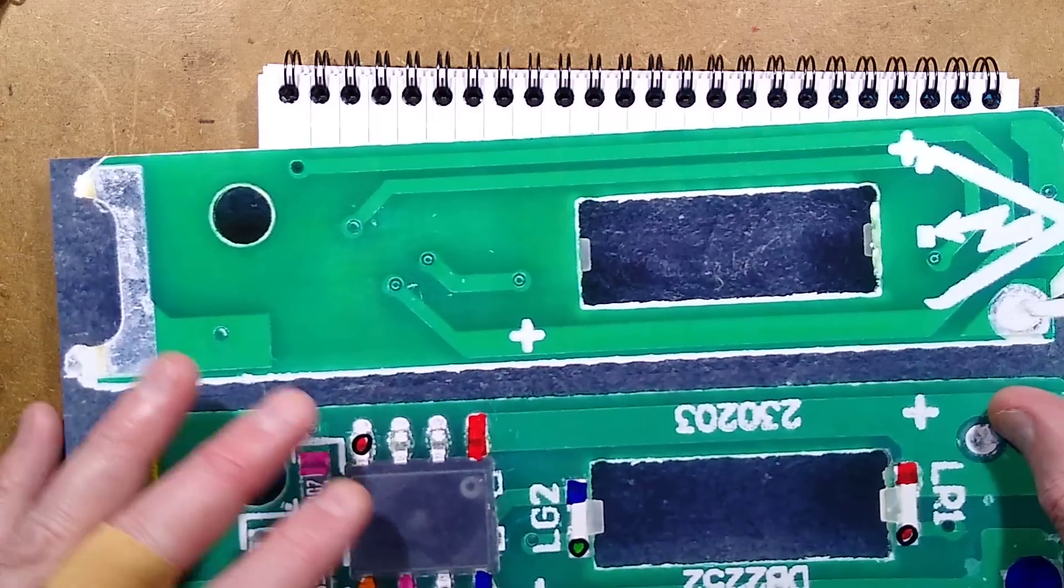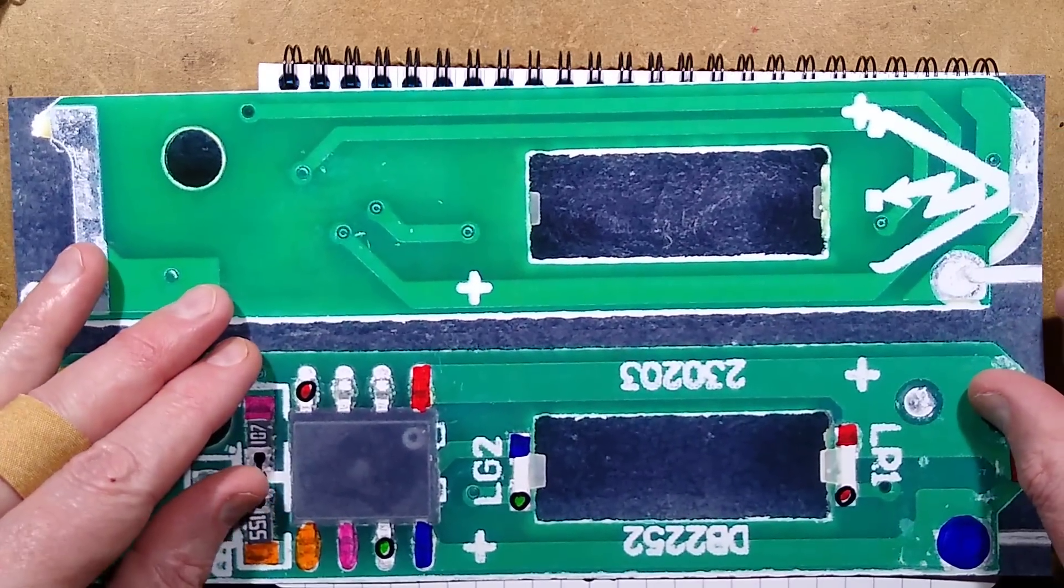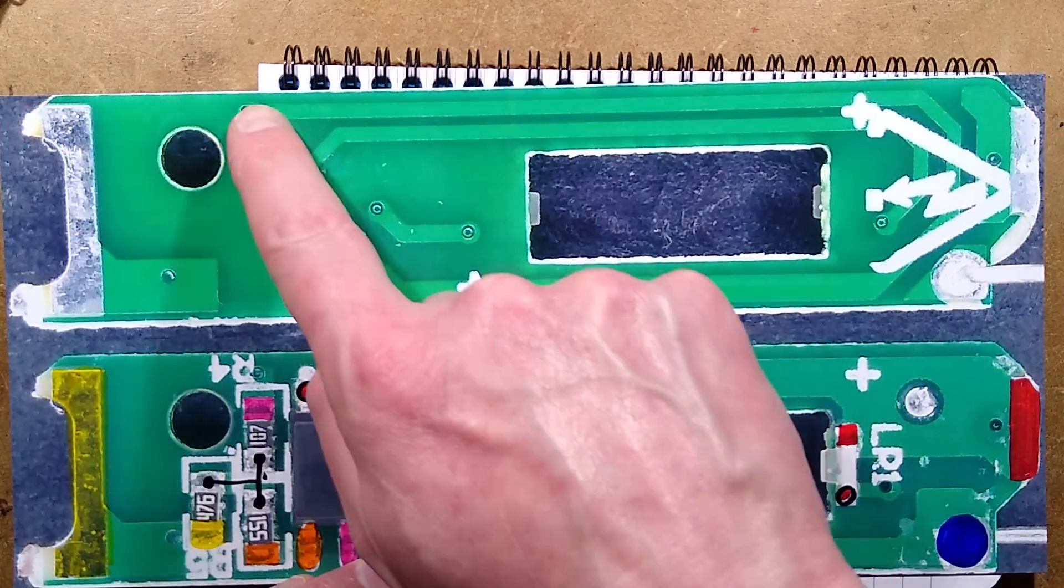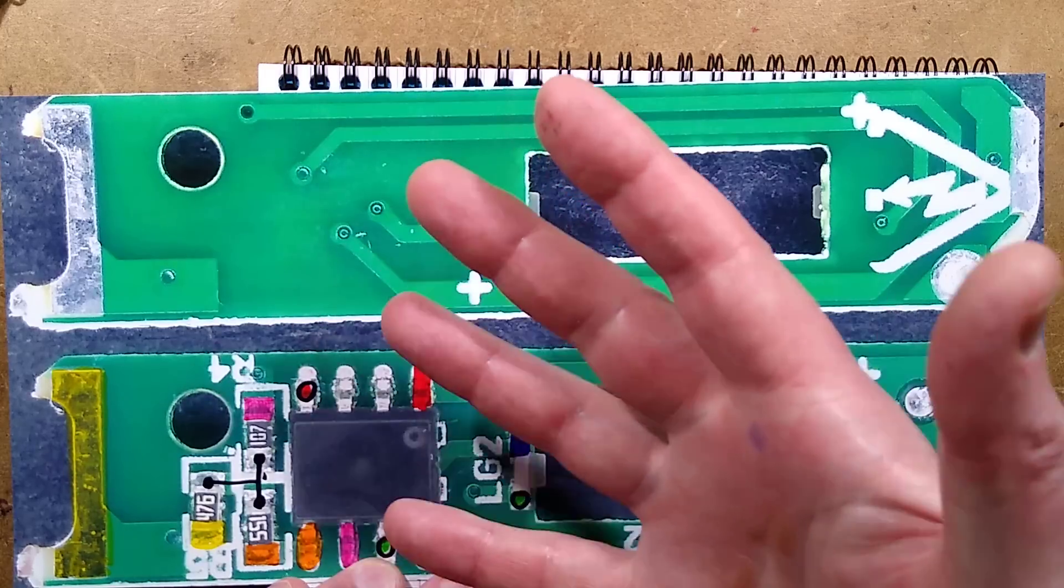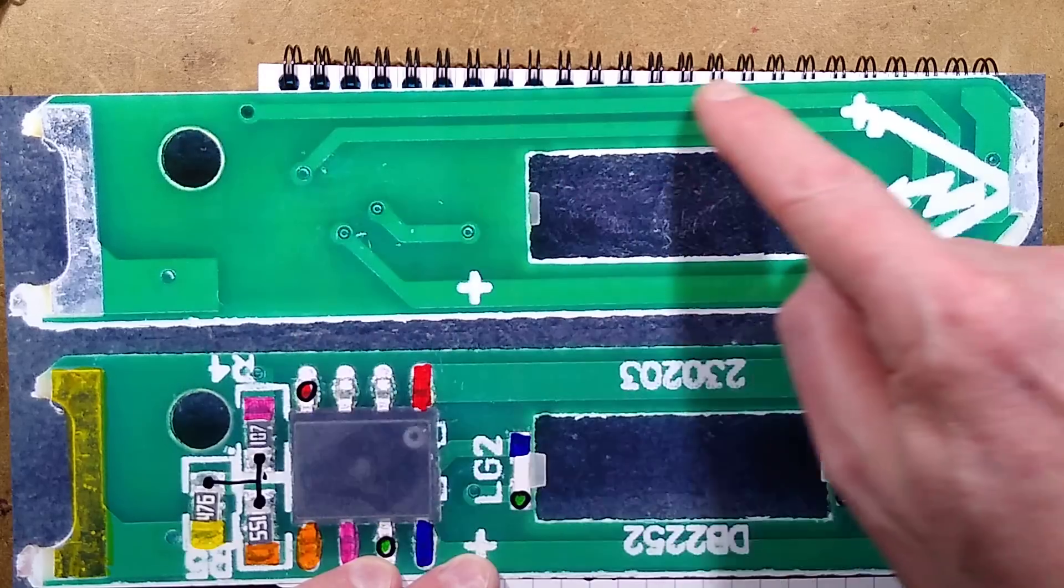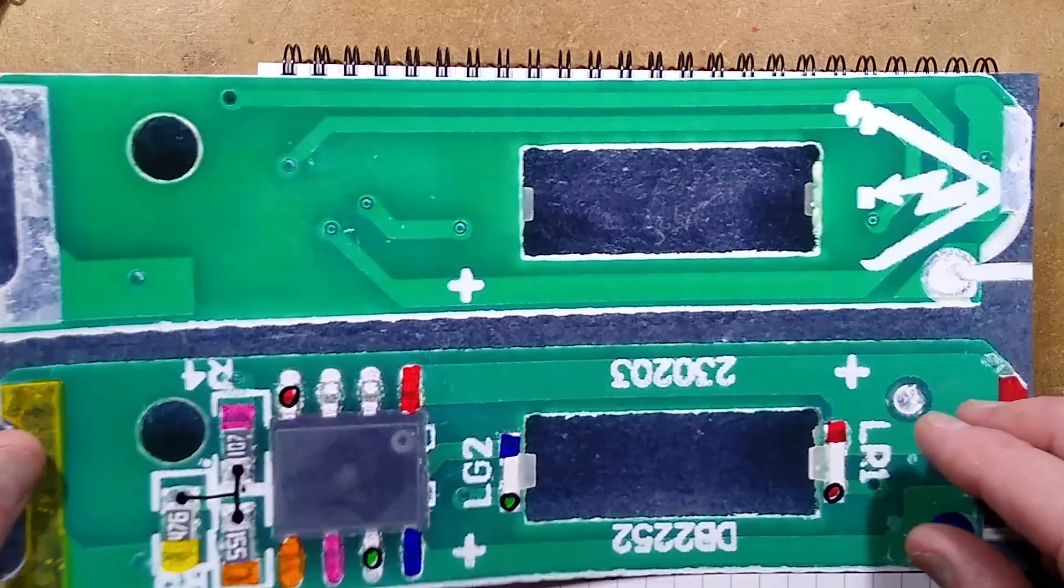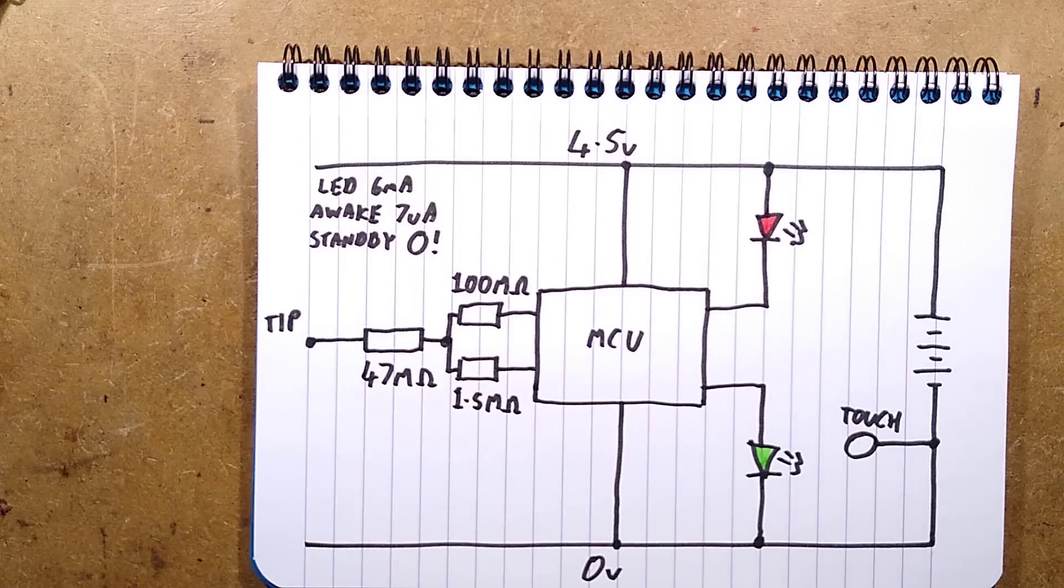Oh note, incidentally, that the super high impedance input, the one with the super high value resistor, 100 megohm, the track layout is a bit odd, it comes right up around here and back down. Don't know if that's for field sensing, it might be for field sensing. Not sure.